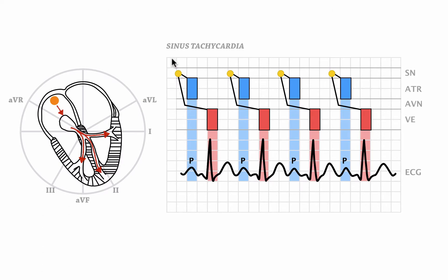One important thing about sinus tachycardia is the fact that it's a symptom of another extracardiac cause, something like exertion, fever, pulmonary embolism, anemia, and so forth. So the heart rate increases when the underlying cause is present and ends when it's gone again. That's a little different to atrial tachycardia, and I'm going to tell you how in just a bit.